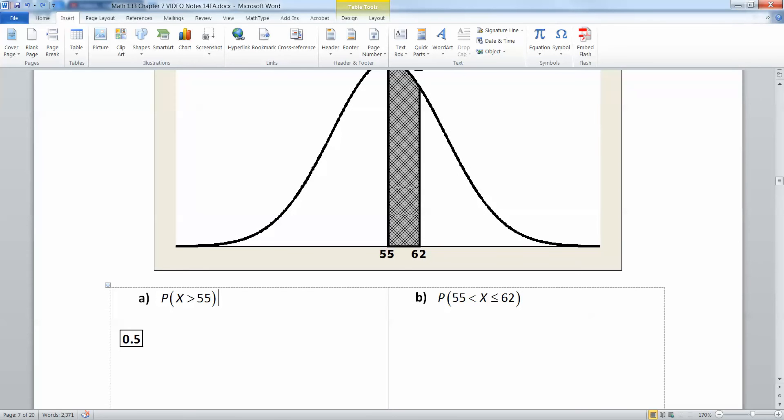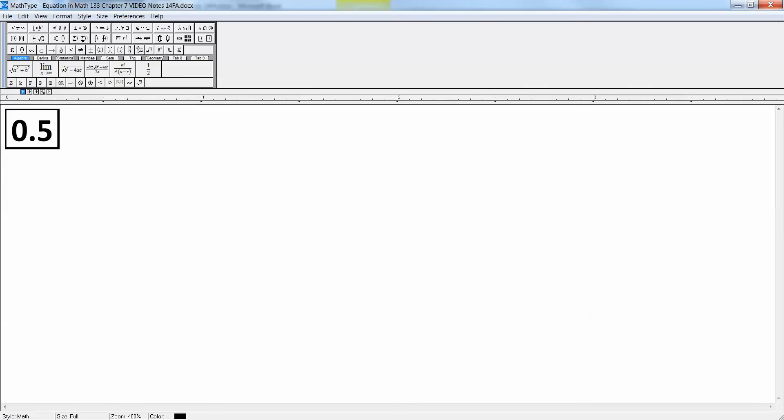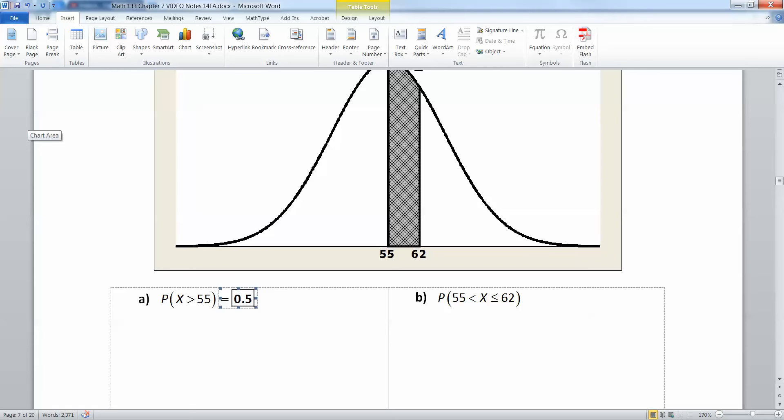Letter a here originally had a typo, it said 50 but it should say 55. I want the probability that X is greater than 55. Well that's half the curve because 55 is the mean and this entire area of the whole curve is 1.